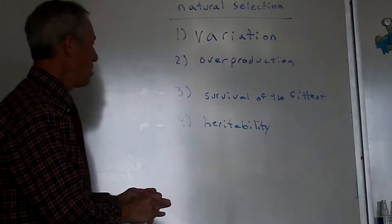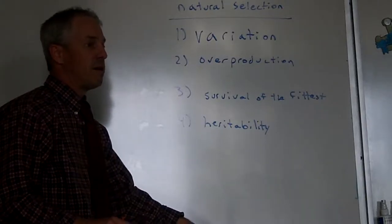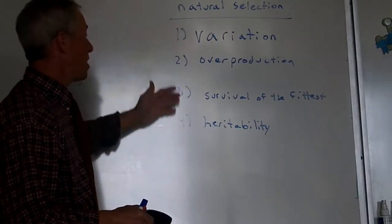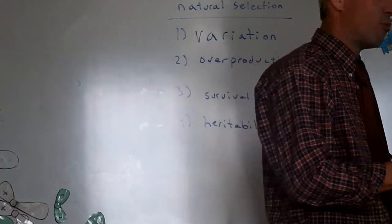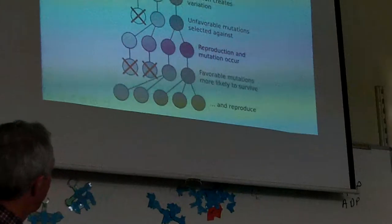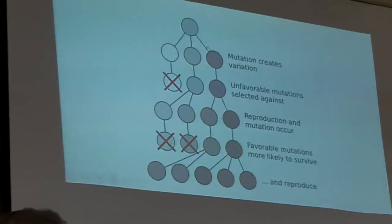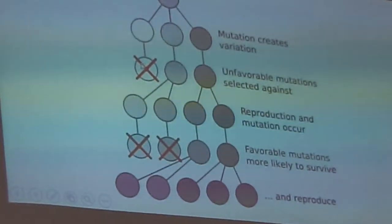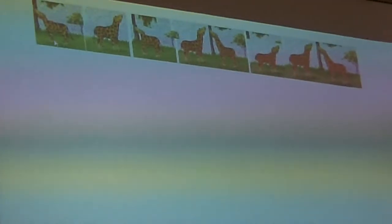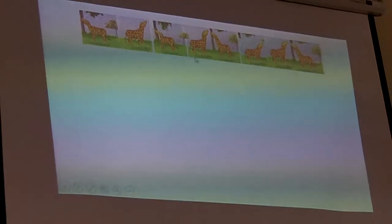He's saying they have to change. If those four things exist, the population will have to change. Just like this chart shows, the population getting darker. Because the lighter ones died out.